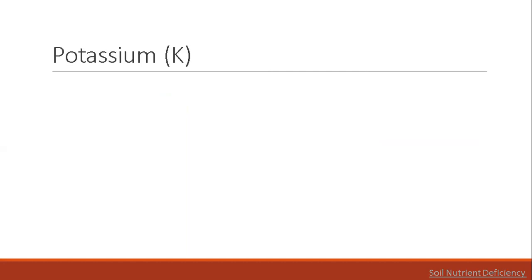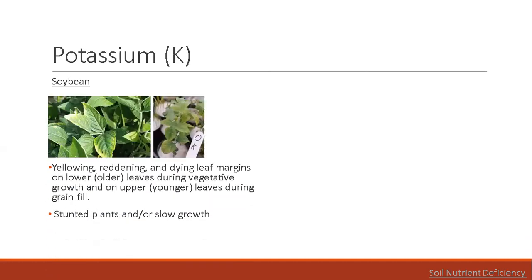Next is potassium. Potassium helps the formation and conversion of energy and sugar that crops need for development through the photosynthesis process, which improves the quality and yield of crops. It also plays an important role in enzyme activation during nodulation. Soybean has a high potassium requirement. In fact, a mature soybean seed contains 60% of the total potassium content of the plant. This nutrient can be leached from coarse-textured soils due to excessive rainfall. In soybean, potassium deficiency can be observed as yellowing, reddening, and dying leaf margins on lower or older leaves during vegetative growth and on upper or younger leaves during grain fill. Stunted plants are common.